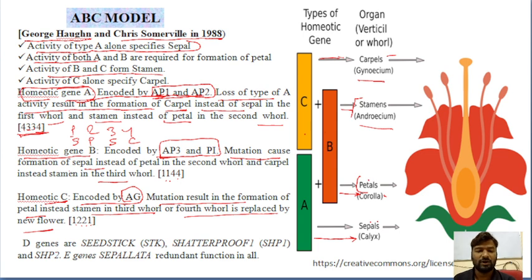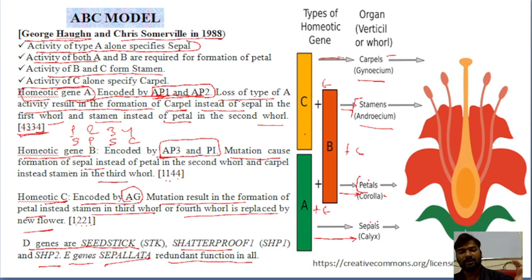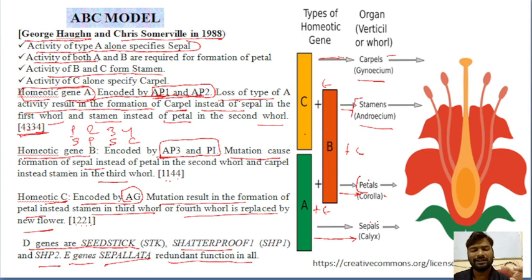The ABC model is also modified with two more gene classes: D genes, which regulate ovule identity, and E genes, which have redundant functions in all whorls, regulating genes as A+E, B+E, C+E combinations. In the next lecture we will discuss in detail the flooring phenomena, evocation, gene regulation, and ABC model, and we will also discuss the flooring pathways including the vernalization pathway and other processes.